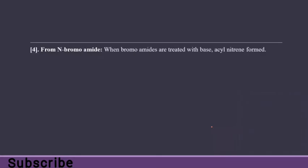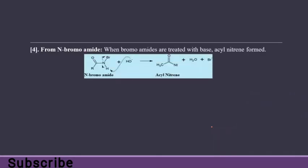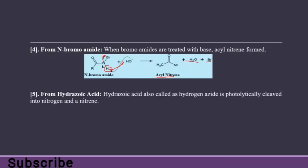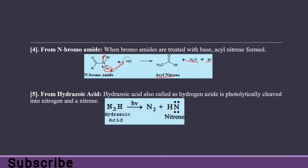From N-bromomide: when bromomides are treated with a base, acyl nitrines form. The base takes the proton from nitrogen, then H2O and bromine are eliminated, giving our acyl nitrine with water and bromine as end products. From hydrozoic acid: hydrozoic acid, also called hydrogen azide, is photolytically cleaved into nitrogen and nitrine — by expulsion of N2, we get nitrine.